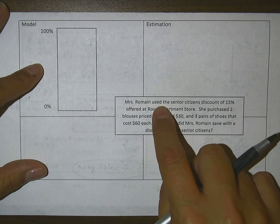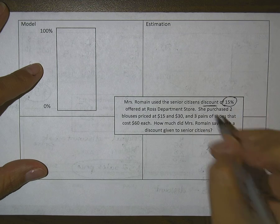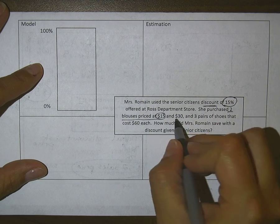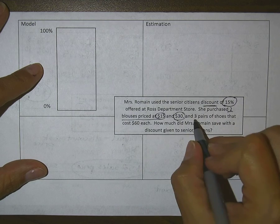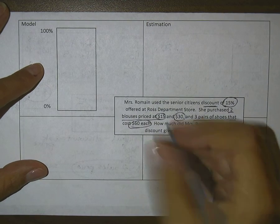Mrs. Romaine used the senior citizen discount of 15% at Ross Department Store. She purchased two blouses priced at $15 and $30, and three pairs of shoes that cost $60 each.